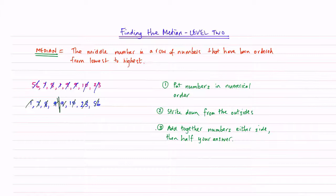Okay, so we're still going to use this method. We're going to add these together either side and then I'm going to half my answer. So 9 plus 9 is going to give me 18. And then I do 18 divided by 2 and that gives me 9. So my median in this case is going to be 9.